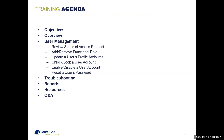Wade Yale at the Bank of New York Mellon will talk you through basic functions: how to review the status of a request, add and remove functional roles, update a user's profile attributes like adding an RSA token after account establishment, locking and unlocking accounts, enabling and disabling accounts, and how to reset a user's password. We'll also cover troubleshooting tips for registration invitation errors, reports available in the portal for auditing, and resources from the Modernization page before opening for Q&A.